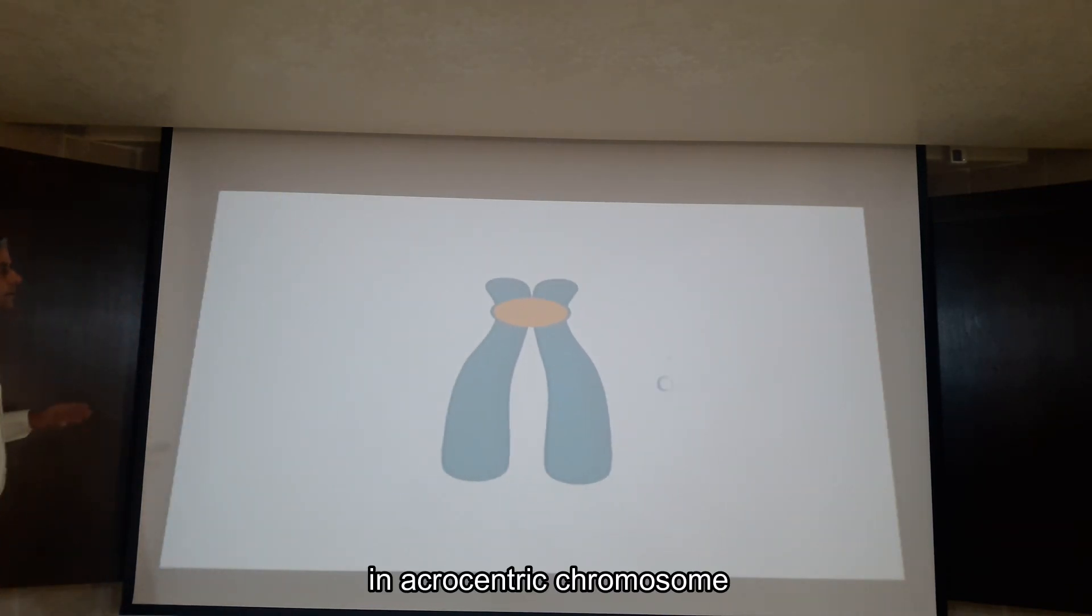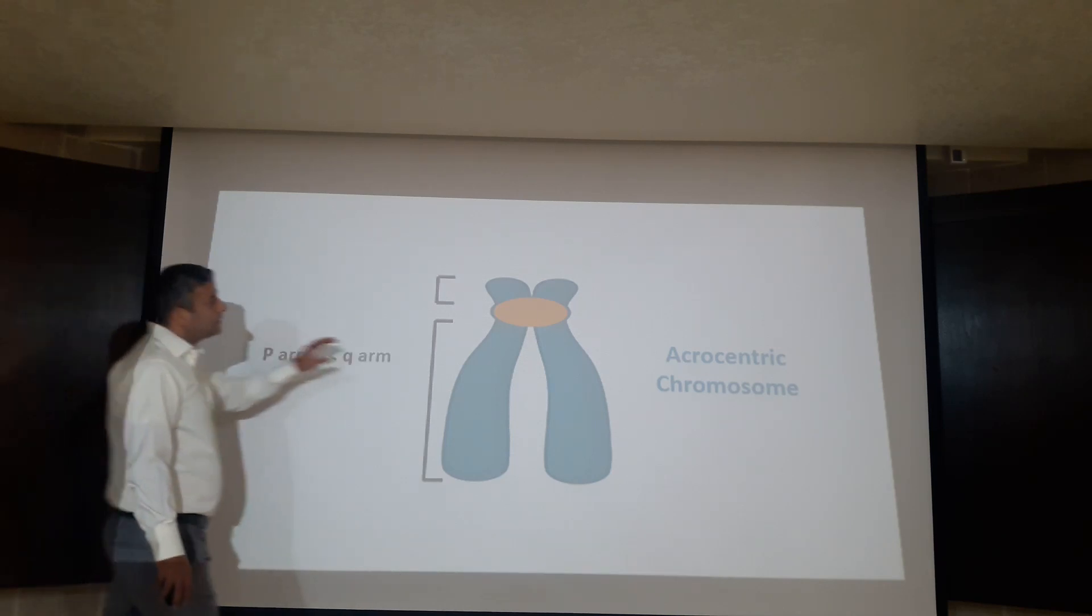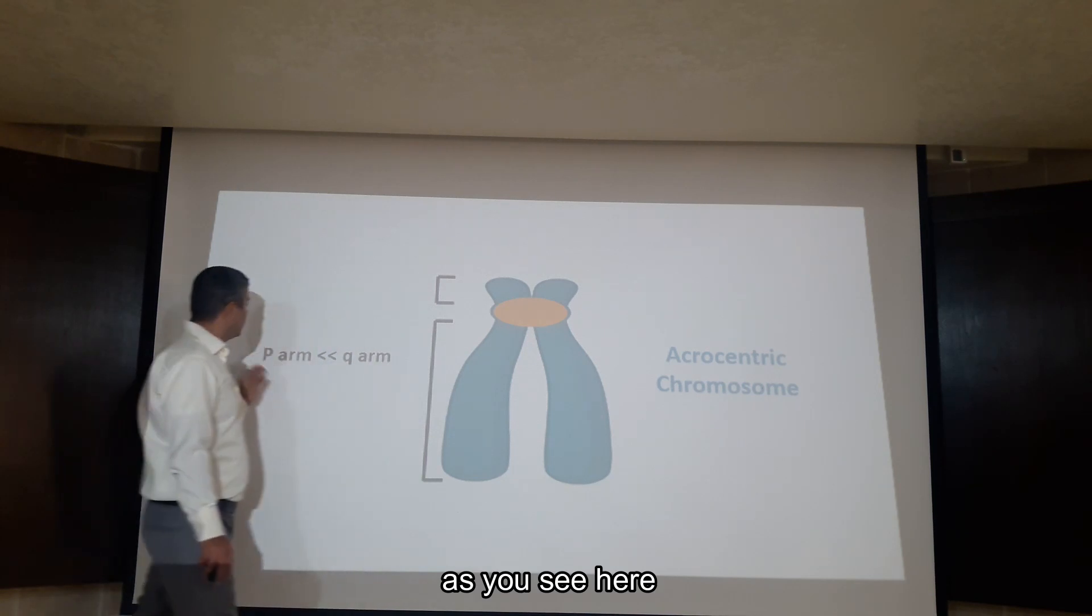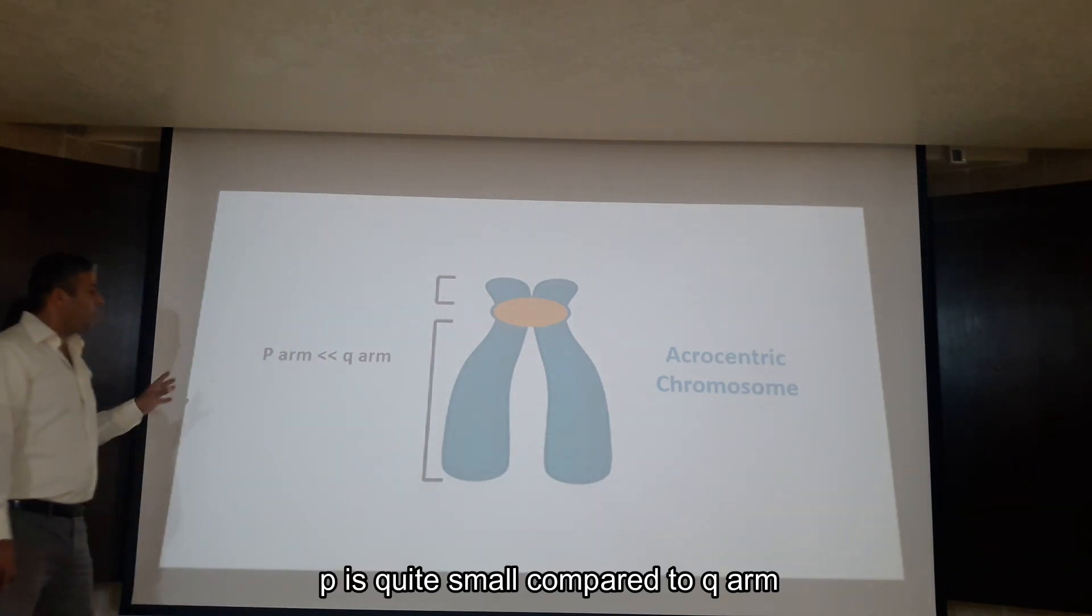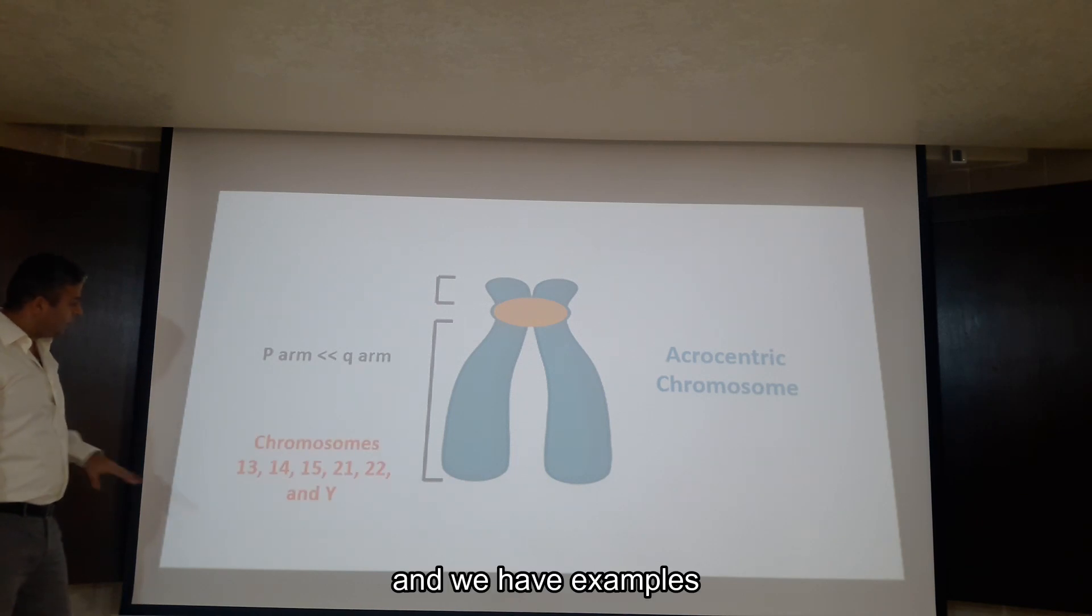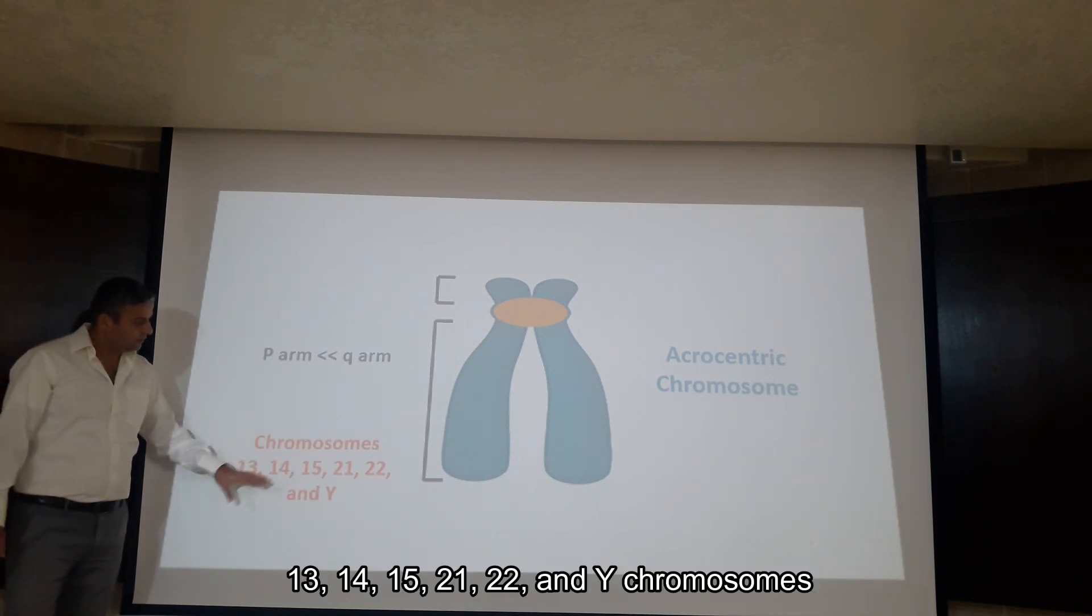In acrocentric chromosomes, the centromere is away from the middle of the chromosome. As you see here, P is quite small compared to Q. And we have examples 13, 14, 15, 21, 22 and Y chromosomes.